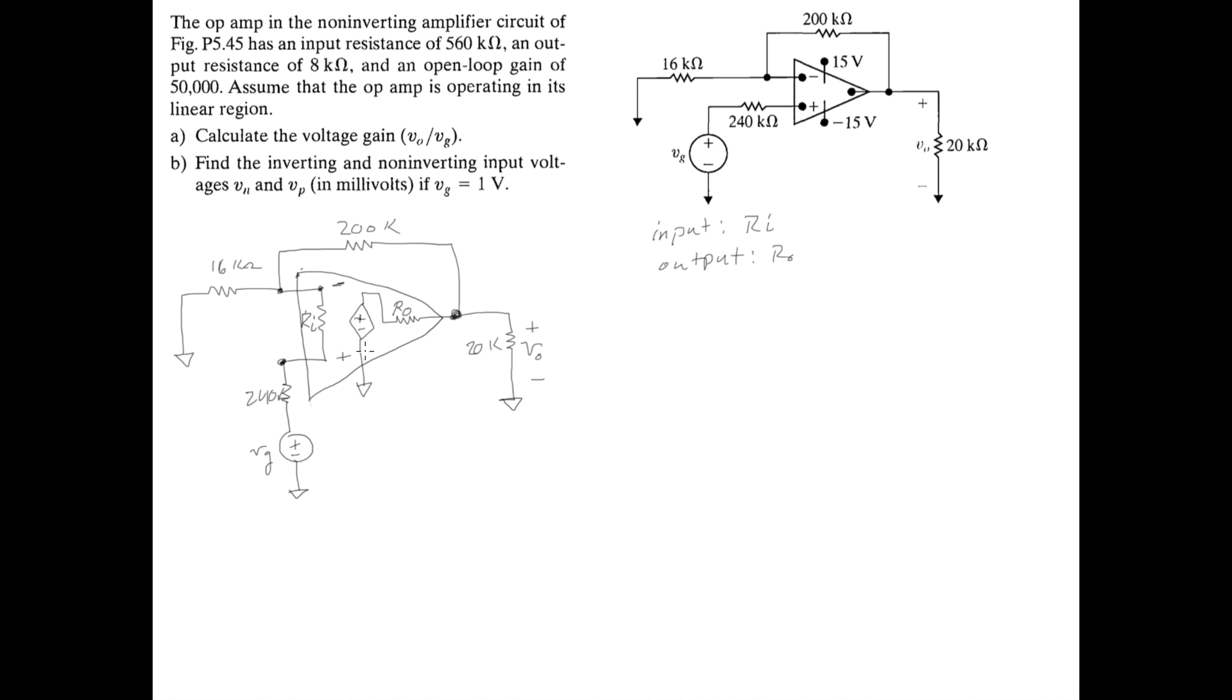And then you also see there's a voltage source. And we'll just label that Va. And Va is just going to be equal to our A value that we're given in this original equation. So in this case, the open loop gain of 50,000, that gain is just A.